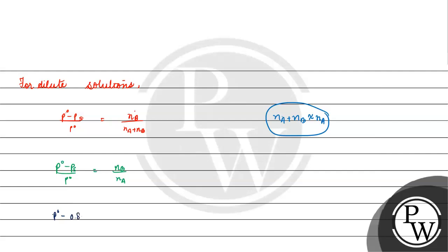So we have: (p0 minus 0.8 p0) divided by p0 equals nb divided by na. Let the mass of the solute be x grams; moles of solute nb equals x divided by 40. The molar mass of octane is 114 gram per mole, so moles of solvent na equals 114 divided by 114, which equals 1.